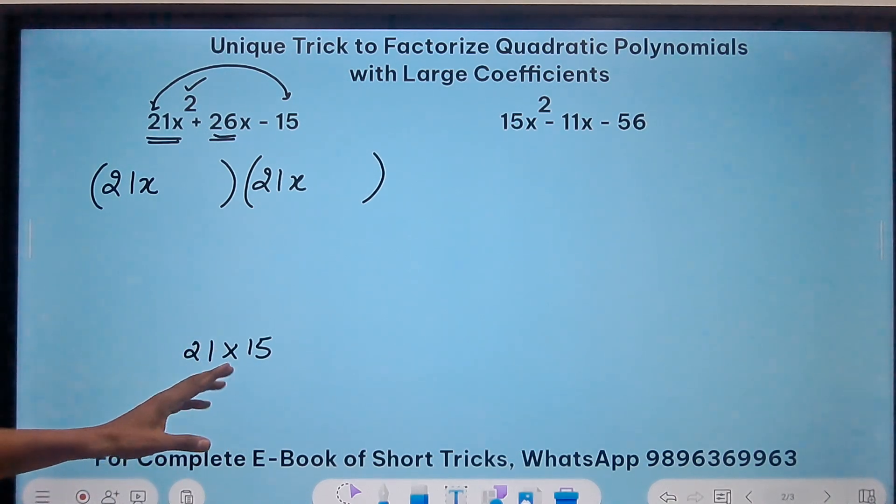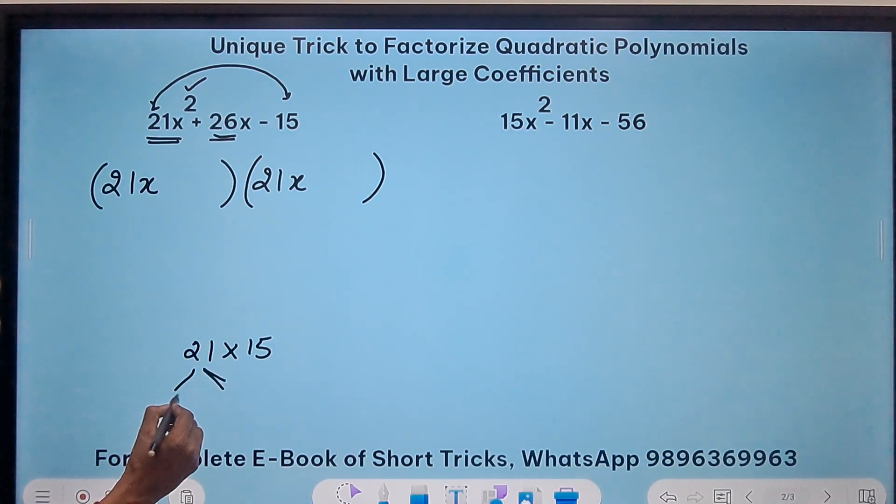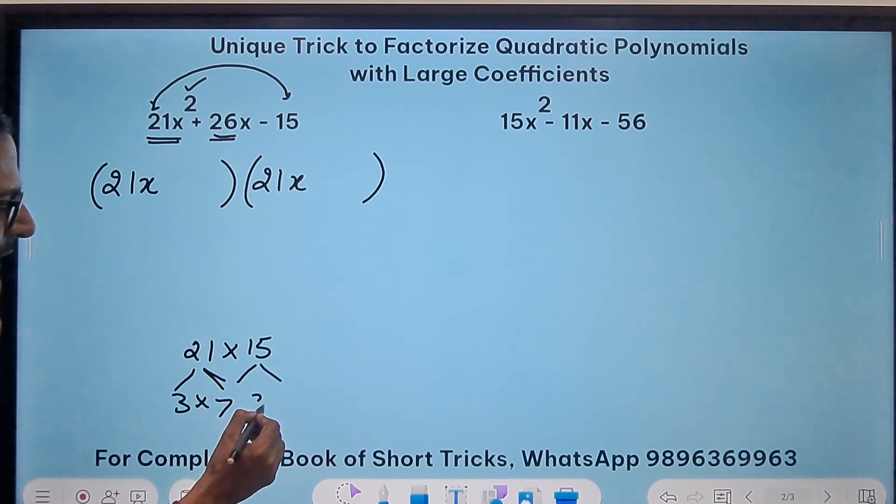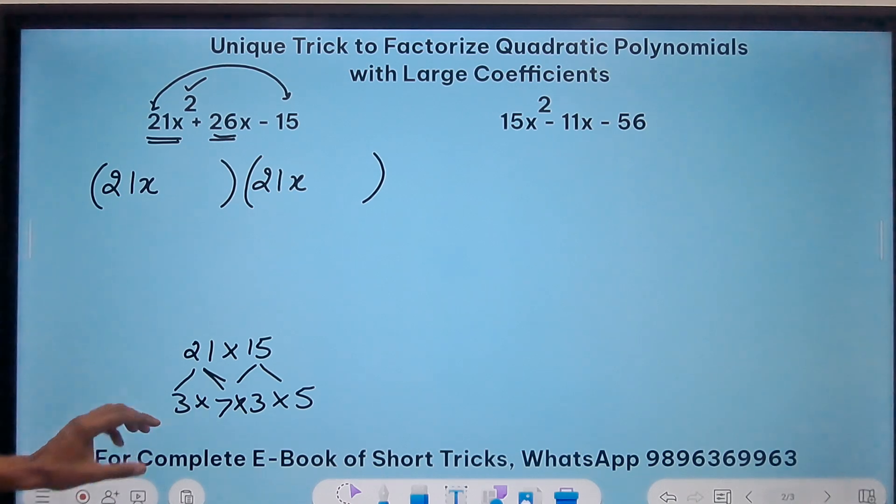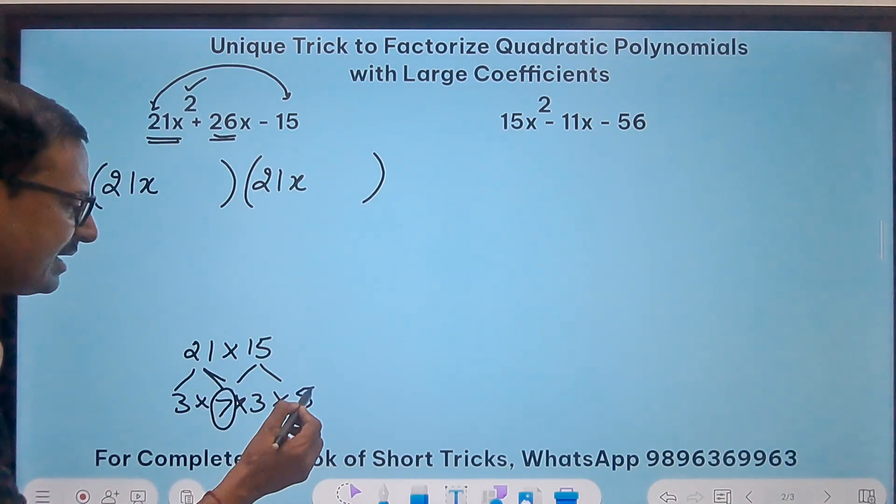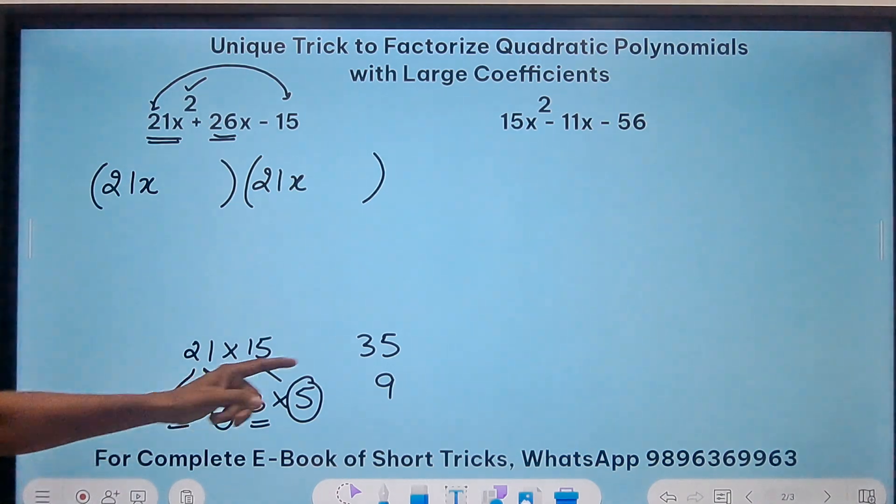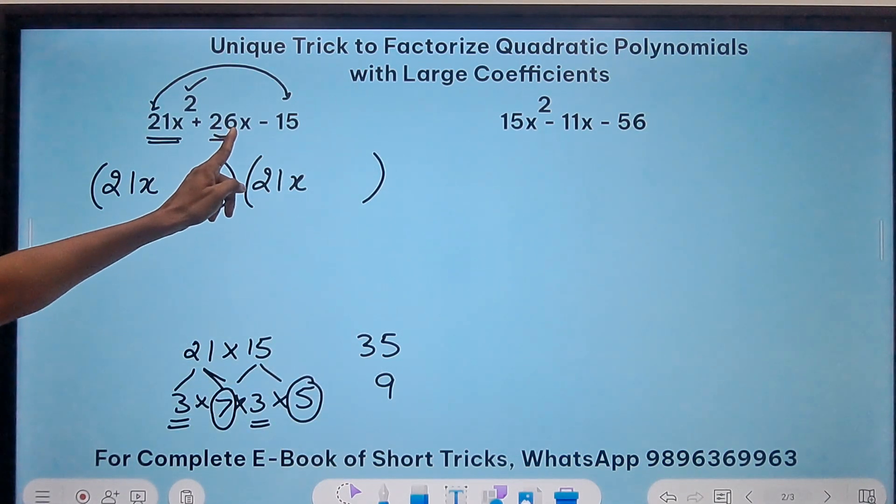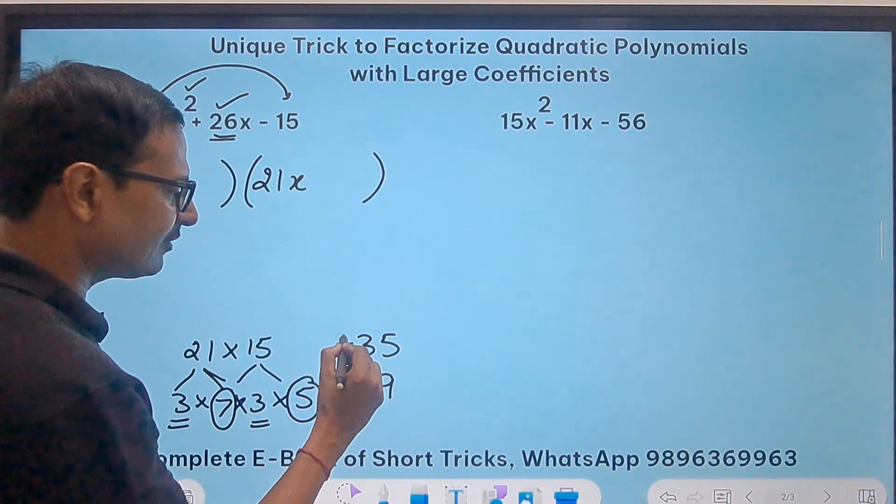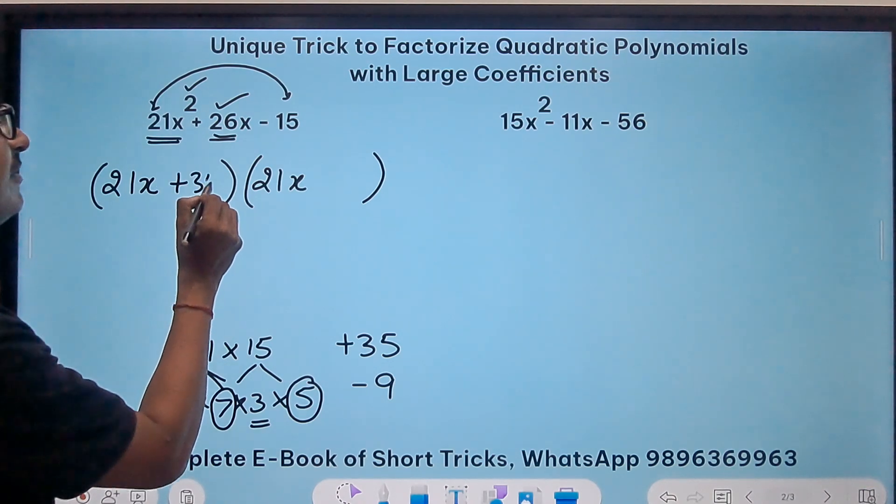Now I have to break it down into smaller factors. So 21 is 3 times 7. I can write 3 times 7 here and 15 is 3 times 5. See I have broken it down into smaller factors. Now can we regroup them and get two integers which on addition or subtraction gives me this number 26? Of course we can, just check 7 times 5 is 35 and 3 times 3 is 9. 35 and 9, the difference between these two is 26 and since this is positive 26, the larger one will be positive and smaller one will be negative. So plus 35 minus 9. Just write them here plus 35 and minus 9. You can write minus 9 and plus 35 also, no worries.